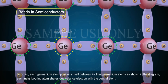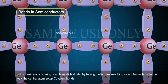Each neighboring atom shares 1 valence electron with the central atom. In this business of sharing, completes its last orbit by having 8 electrons revolving around the nucleus. In this way, the central atom sets up covalent bonds.